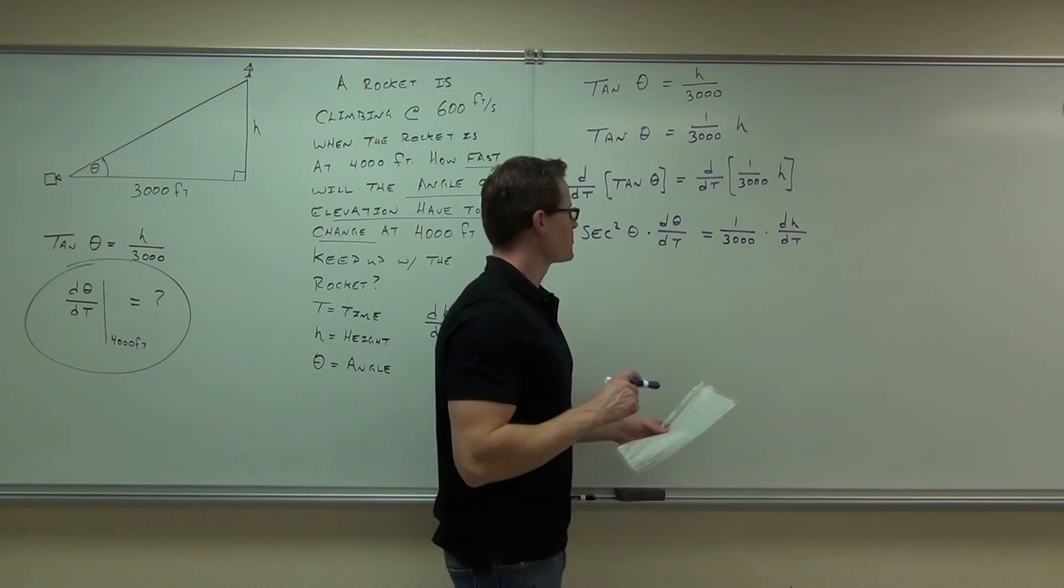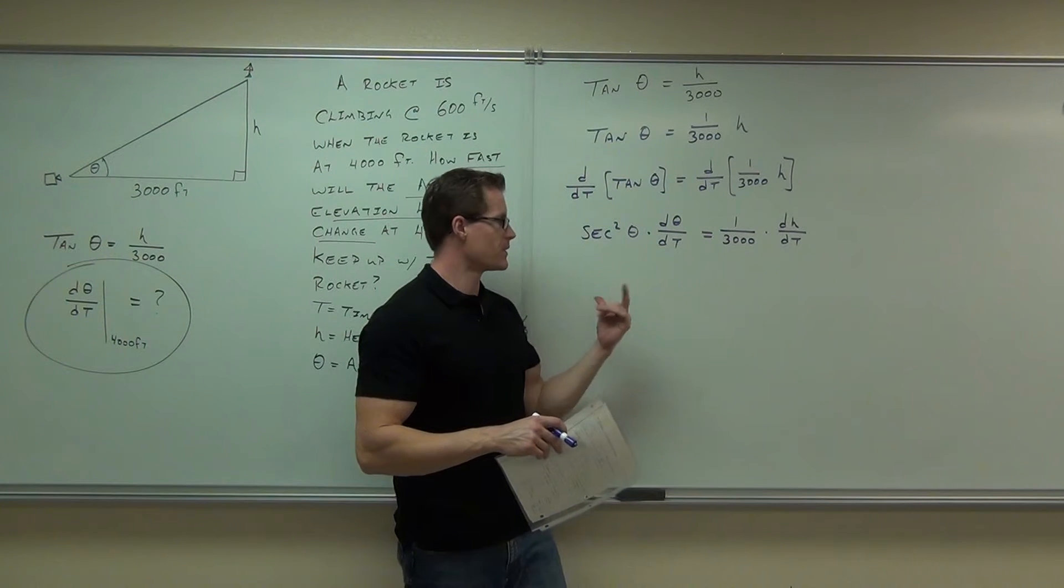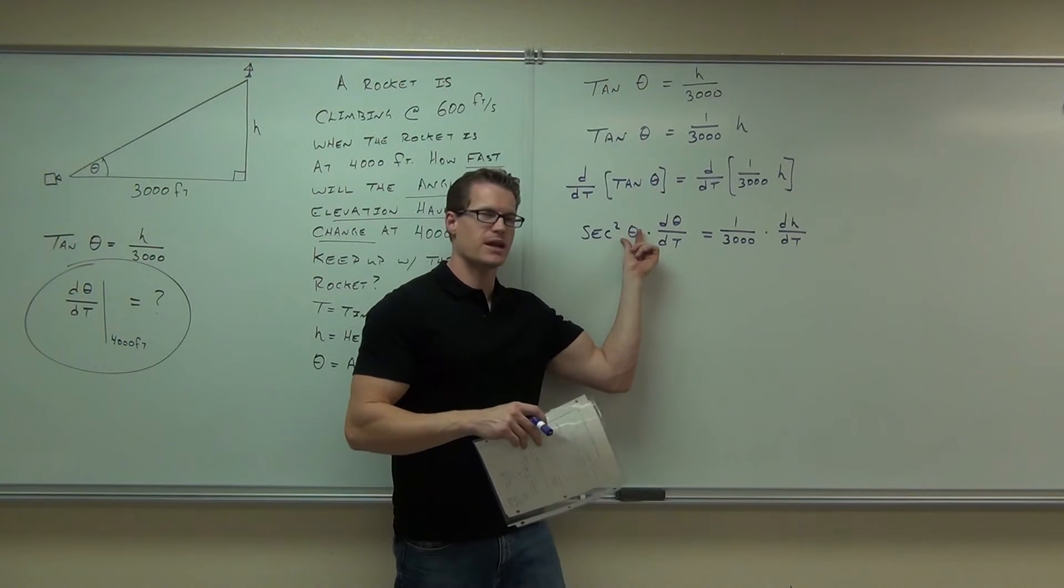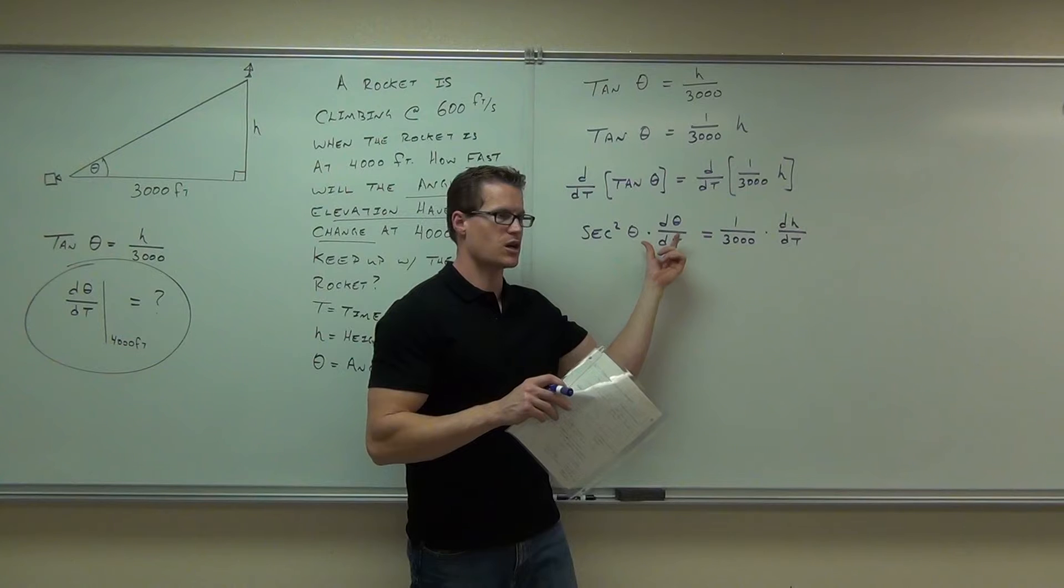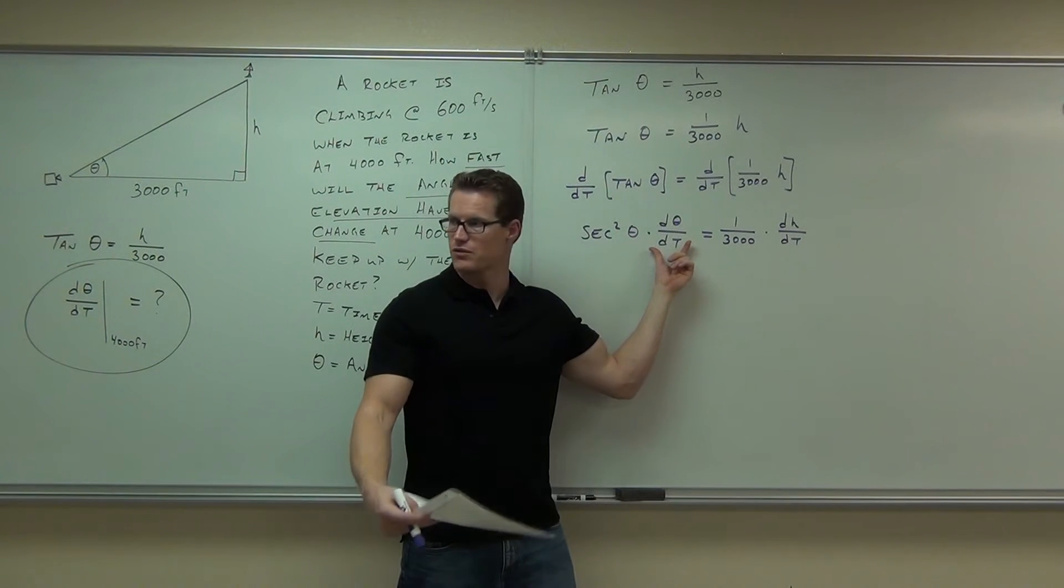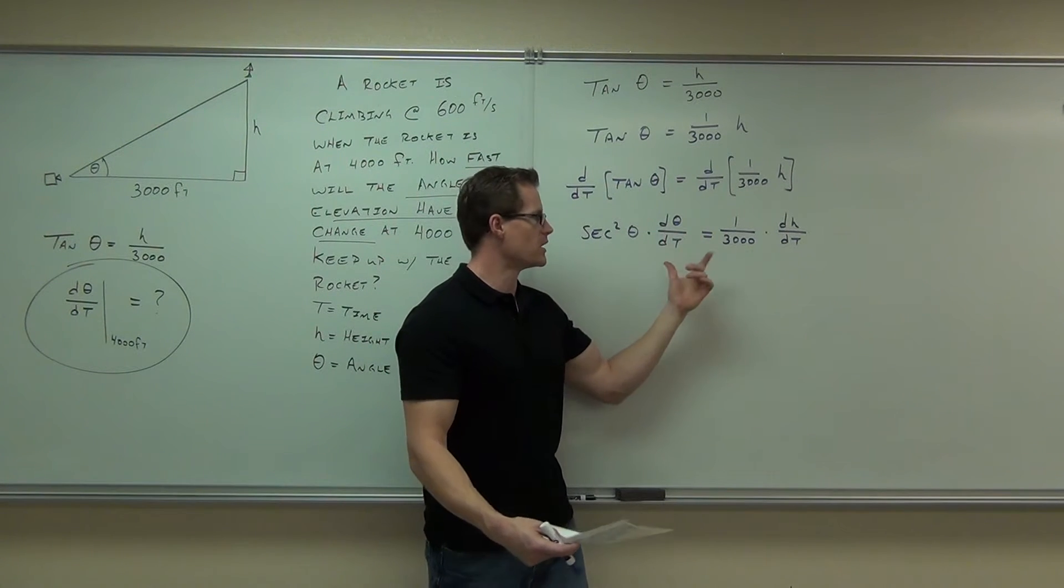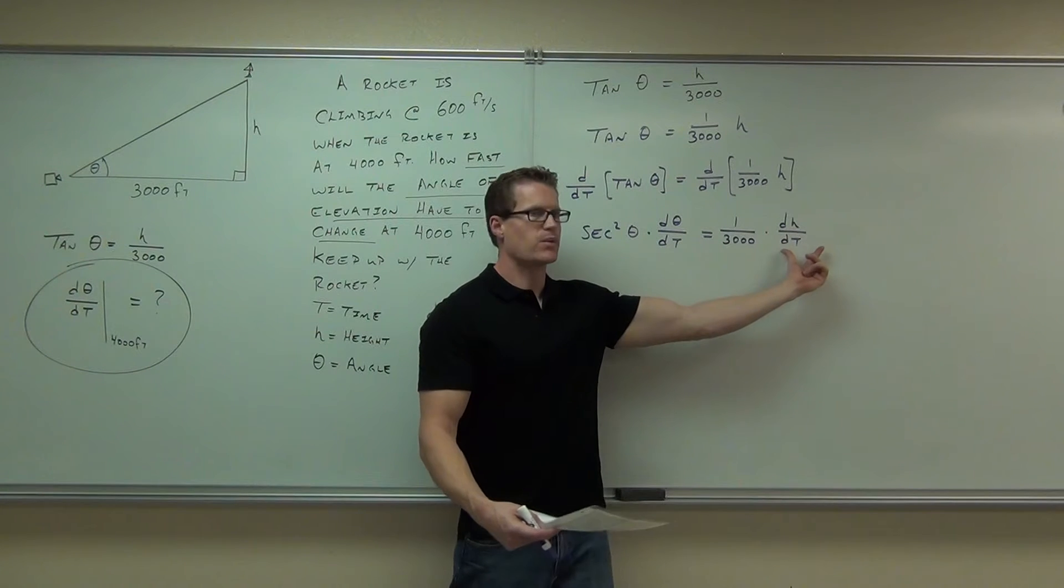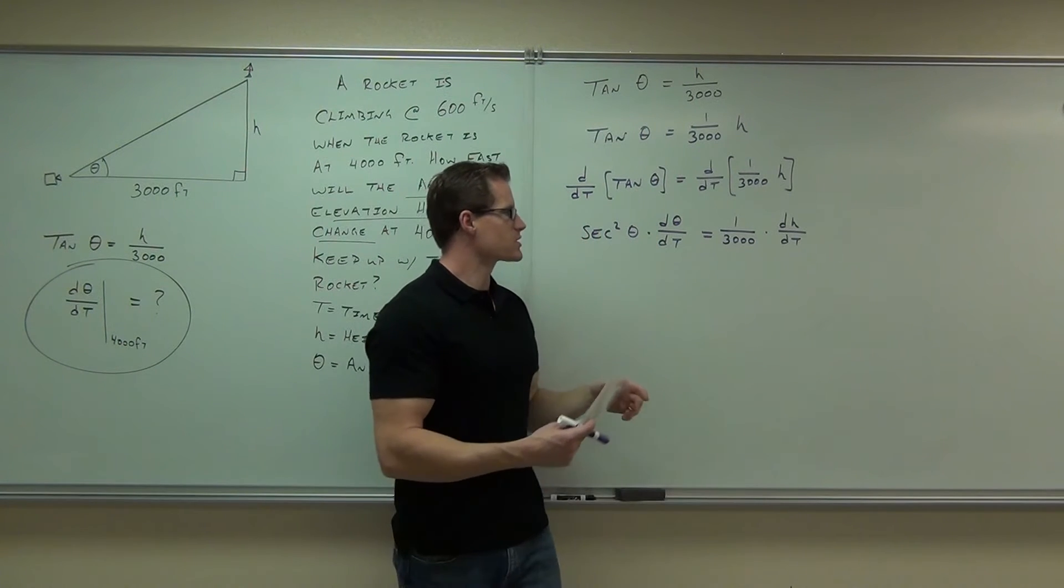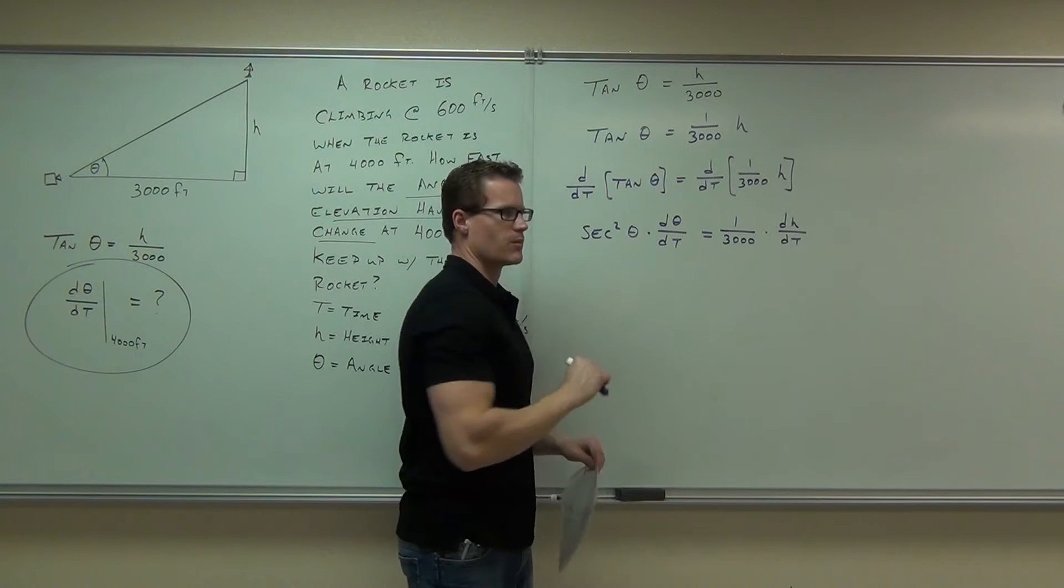Well, now, we're pretty much almost done when you think about it. Which piece are we ultimately looking for? This is not what we're looking for. We're actually not even looking for the theta, because that's the angle. We're looking for the change of the angle over time. We're looking for this piece. How fast is the angle changing over time? At when it's 4,000 feet. This is a constant, and we have a relationship at 4,000 feet.